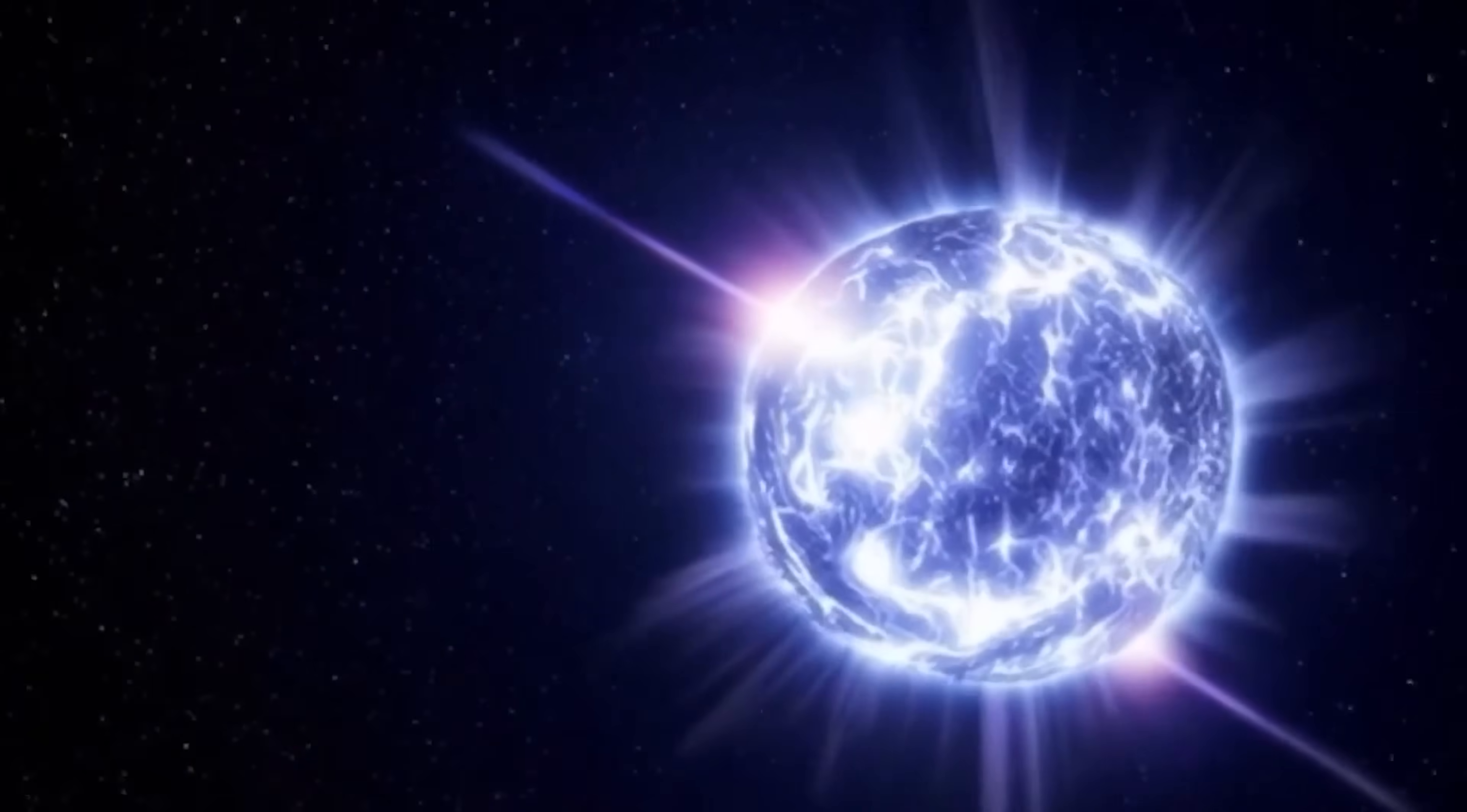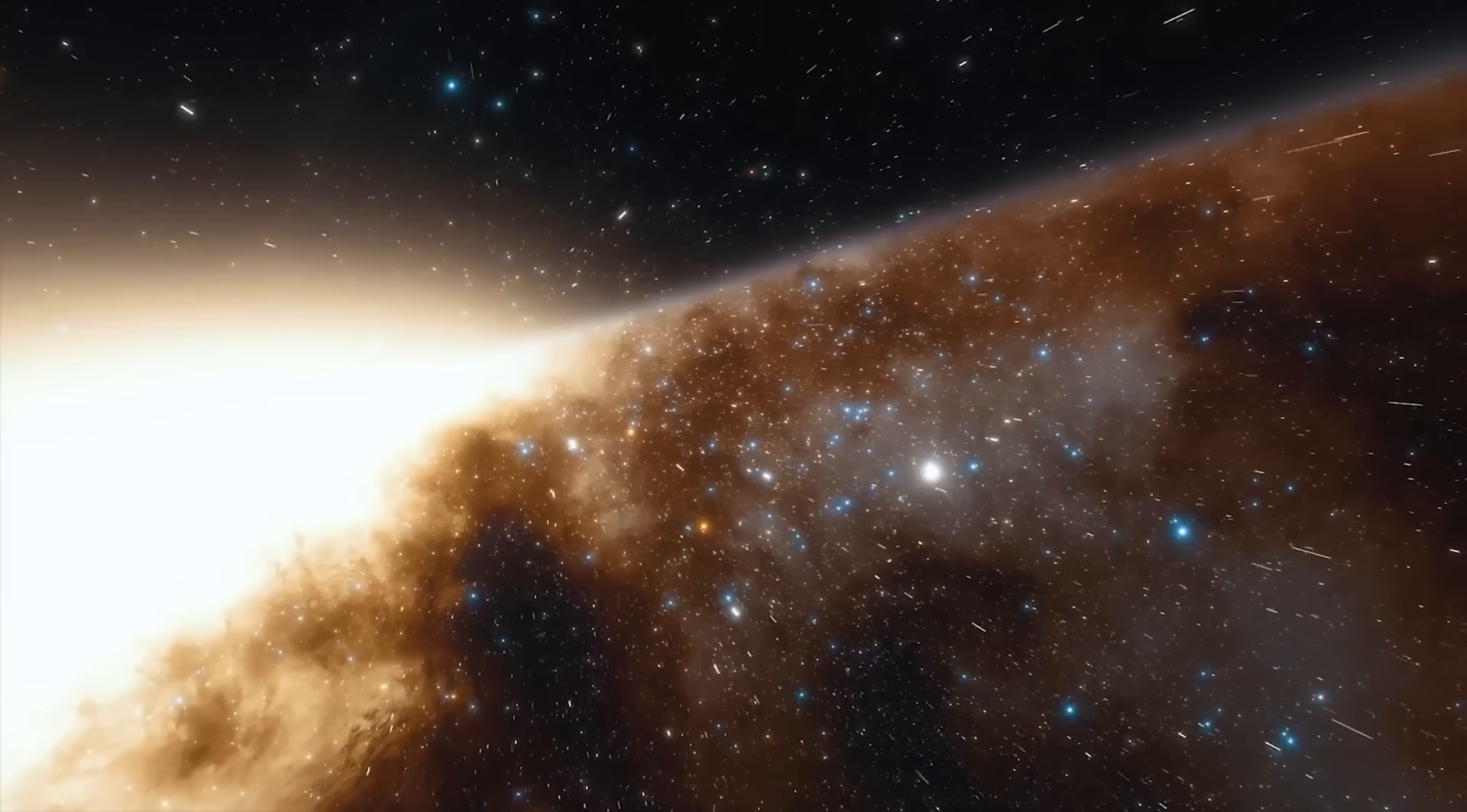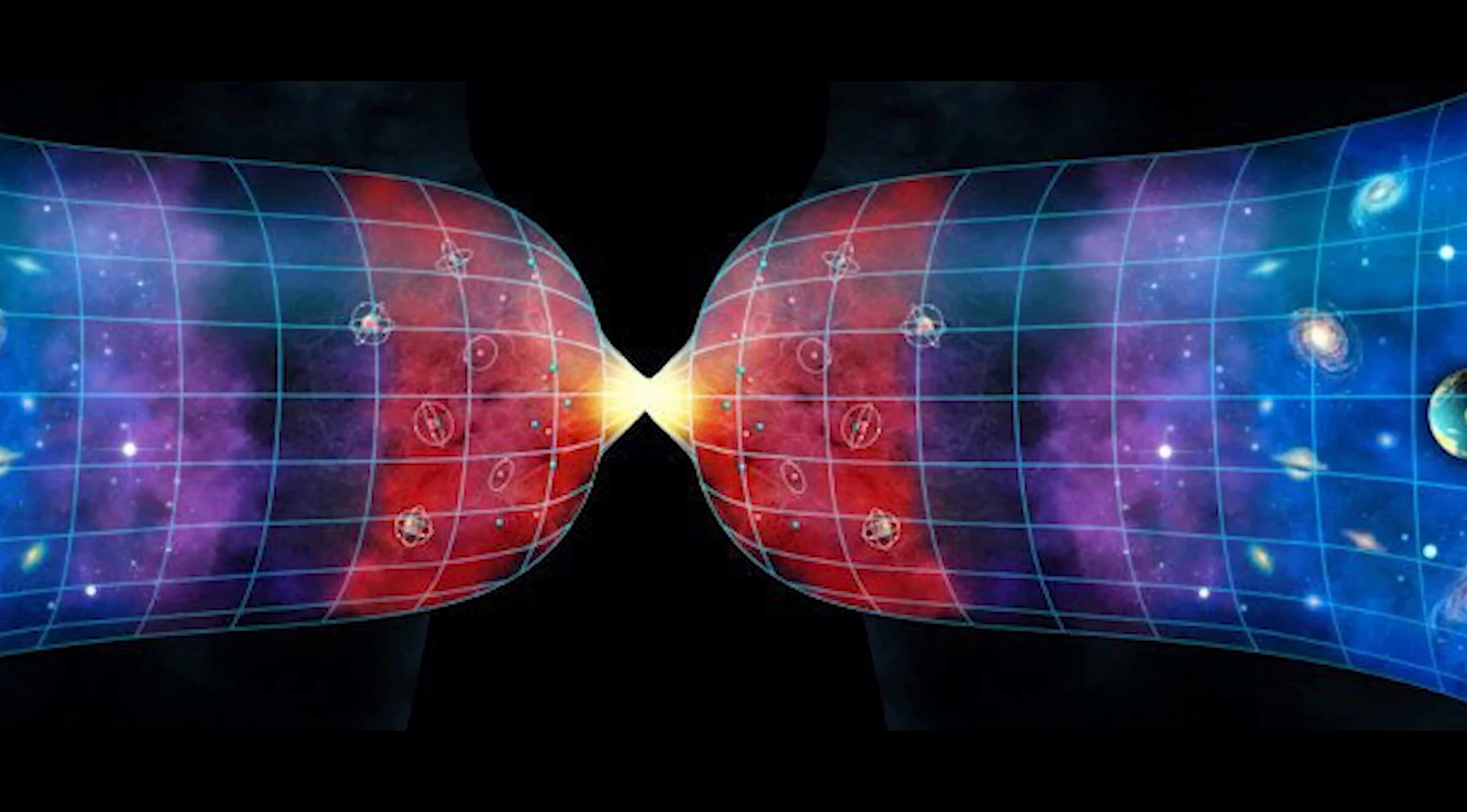This is where the conversation touches the edge of known science. Nobel laureate Roger Penrose has proposed a theory called conformal cyclic cosmology, the idea that our universe might exist in cycles, with each cosmic era giving rise to the next. You don't have a measure of the scale of space. You do have the structure, what's called the conformal structure.